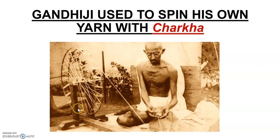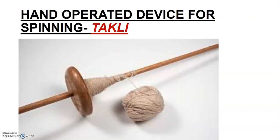Gandhi ji used to spin his own yarn using a charkha. Whenever we talk about charkha, we remember Gandhi ji, because he was the one who asked Indians during the independence movement to use the charkha for spinning and making their own cloth instead of depending on foreign-made goods. Another device used for spinning is the tuckli, which is a hand-operated device. This can be asked as: name a hand-operated device used for spinning.